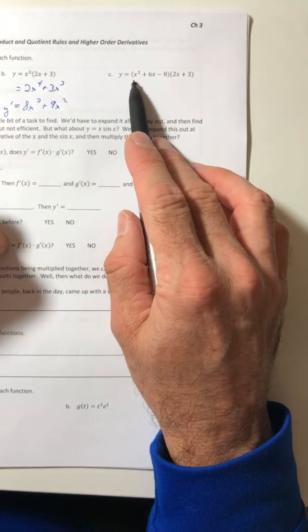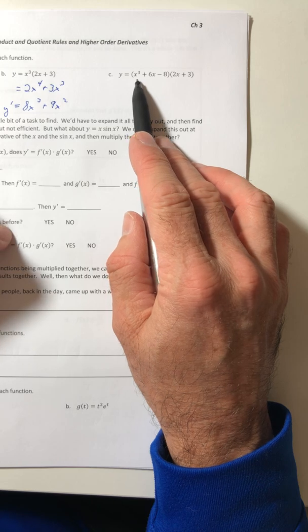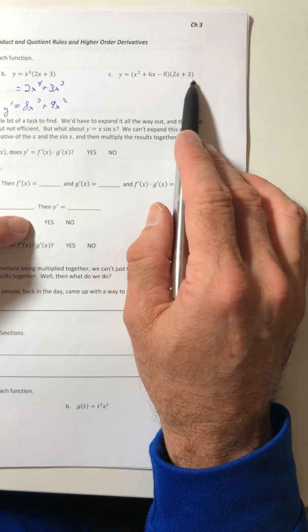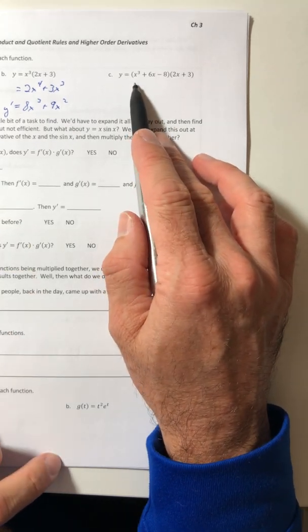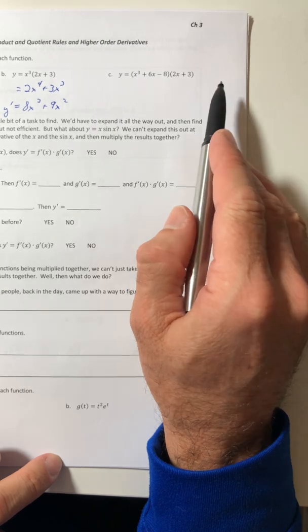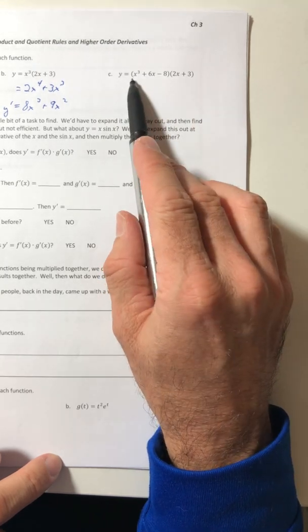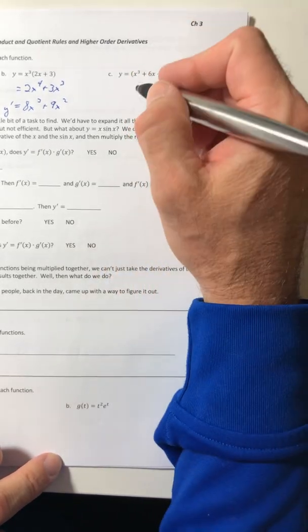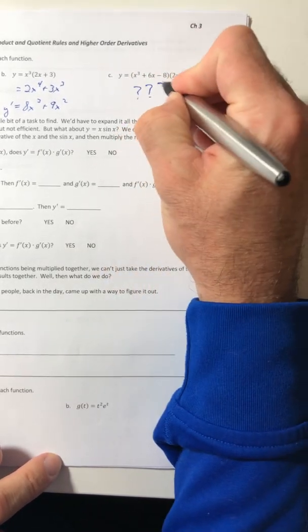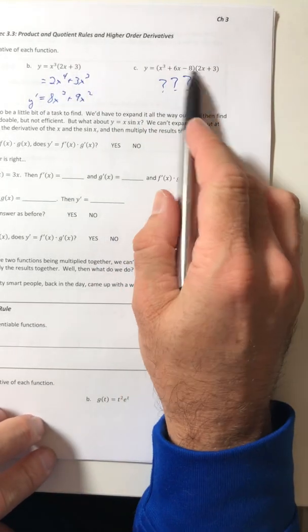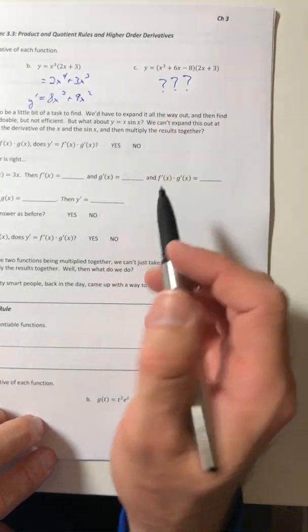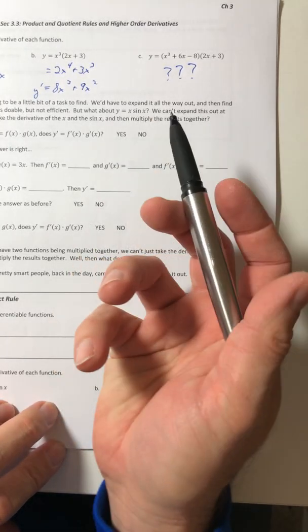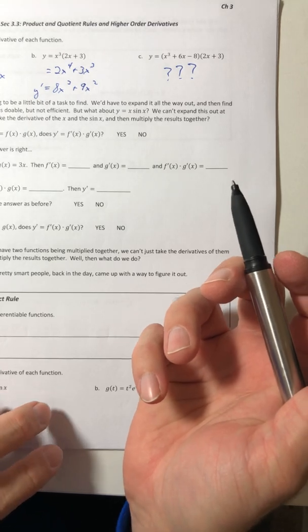Okay, part c, well this one, I can't use the power rule yet either. I'd have to multiply all this stuff out and then I could. But that one, that seems like it's a lot of extra time that I don't really want to do. Like I can foil that, it's just a little bit tedious. So let's go ahead and leave that one alone. Like I don't really want to expand all that out. I can, but I just don't want to. Okay, so there has to be a more efficient way than doing this.